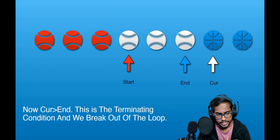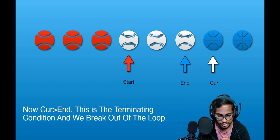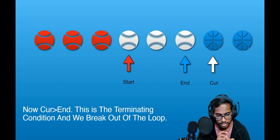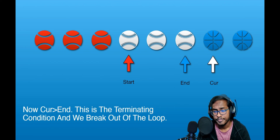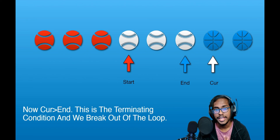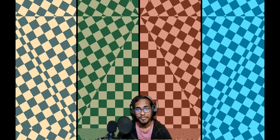Now let's talk about the time complexity. We maintain three indices and traverse through the array. In the worst case, we traverse the entire array only once — this occurs if all the balls are of the same color. Assuming the input array size is n, the time complexity is O(n). The space complexity is O(1), because we only declare three pointers — start, end, and cut — which take constant space in memory.